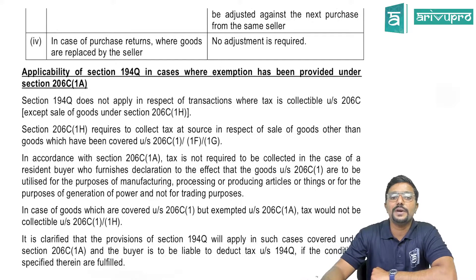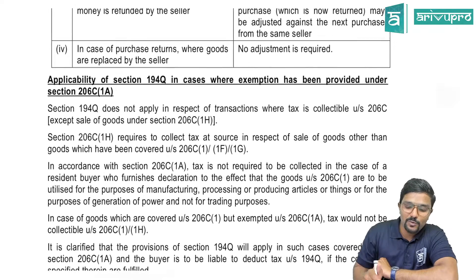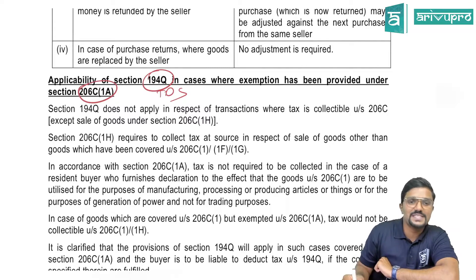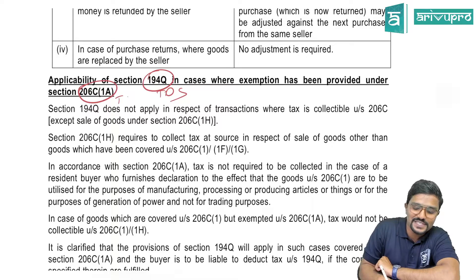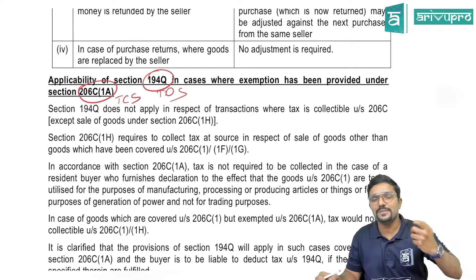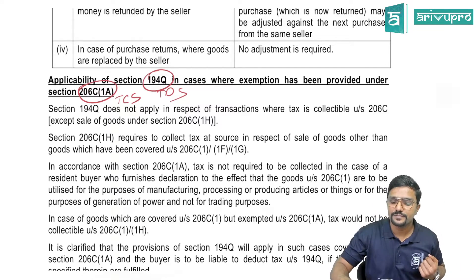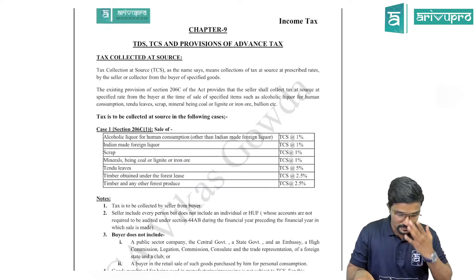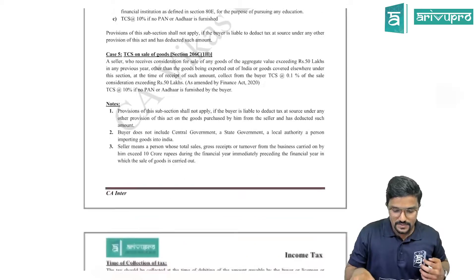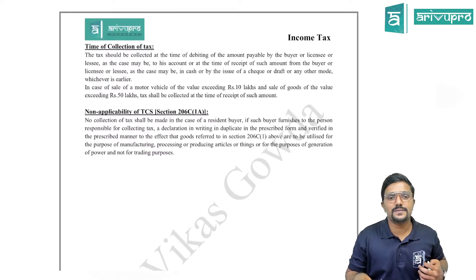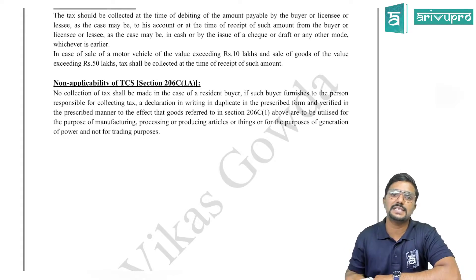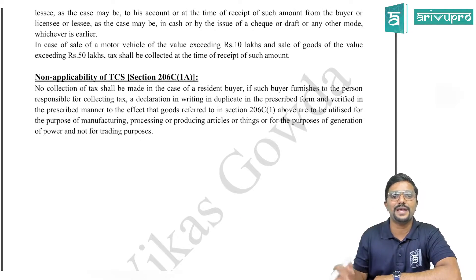Next: applicability of Section 194Q in cases where exemption has been provided under Section 206C(1A). Section 194Q talks about TDS whereas Section 206C(1A) talks about TCS. Let me first go through that provision: for TCS, it is not deduction but collection — the seller collects TCS from the buyer. There are various cases in which the seller collects TCS.